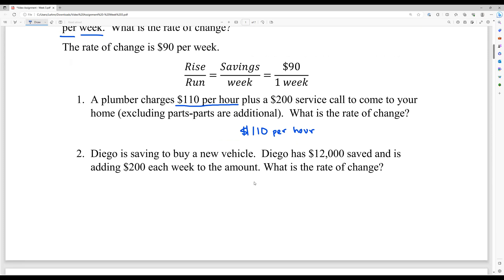Diego is saving to buy a new vehicle. Diego has $12,000 saved and is adding an additional $200 each week to the account. So even though I didn't say the per every week, he's adding an additional $200. So that is the rate of change, the $200 per week. And again, you could write that as over one week and this one over one hour if you wanted to see it in rise over run format.